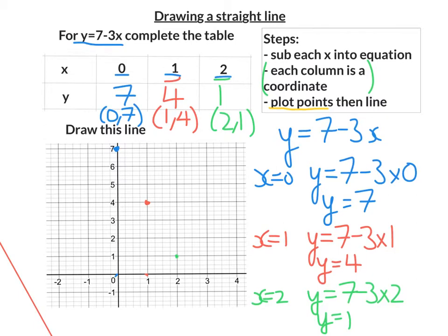So there are my points. And then using a ruler, I plot a straight line that goes through all of them. And I extend it both ways. So that would be my line. And finally, let's just write what the equation is. This is y is equal to 7 minus 3x.